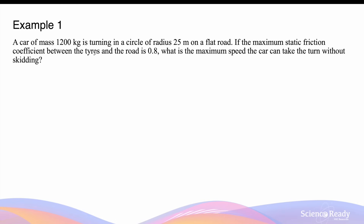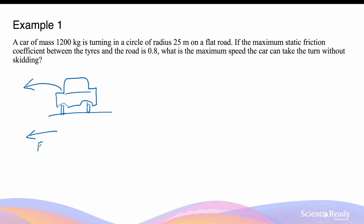A car of mass 1200 kilograms is turning in a circle of radius 25 meters on a flat road. If the maximum static friction coefficient between the tires of the car and the road is 0.8, what is the maximum speed the car can take the turn without skidding? If we take a cross-sectional view of the scenario, we have the car here, with the front of the car turning to the left, with centripetal force directed towards the center of the circular turn.